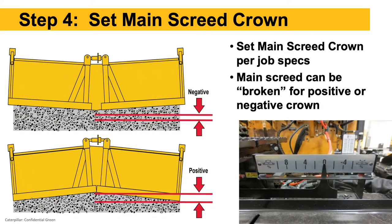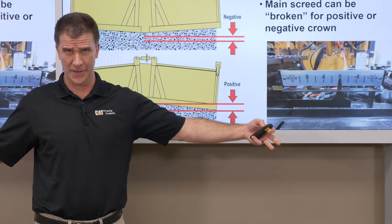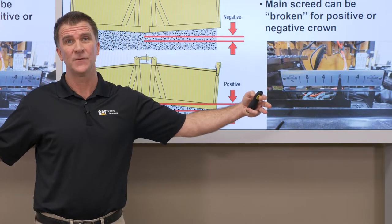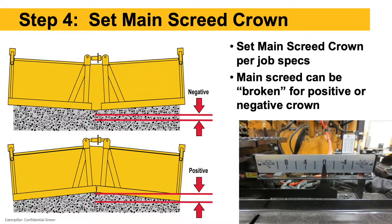Step 4: set the main screed crown. In the center of the main screed there's an adjustment for negative crown — like a V or swale — or positive crown. Most times if we do have crown it's positive, maybe one or two percent, for drainage from the center of the roadway depending on what we're paving. A lot of times we're just paving flat with zero crown in the center — for example, on a 12-foot driving lane we would just have zero crown or flat.